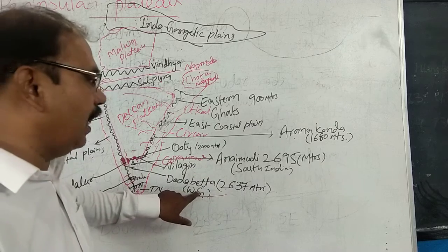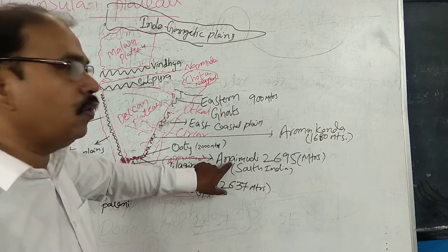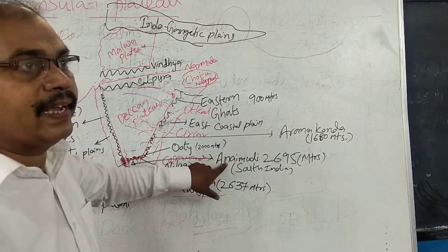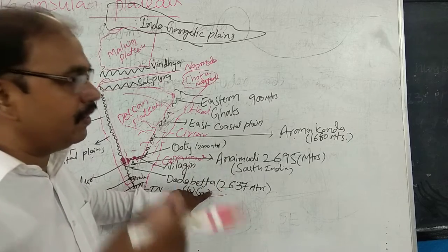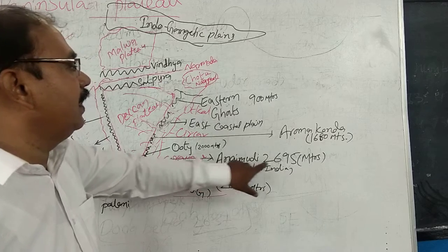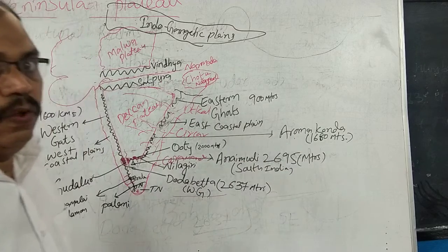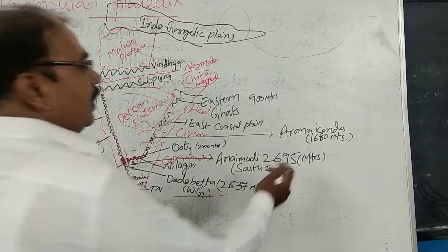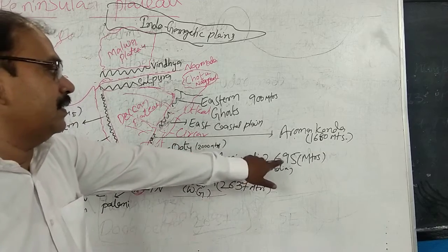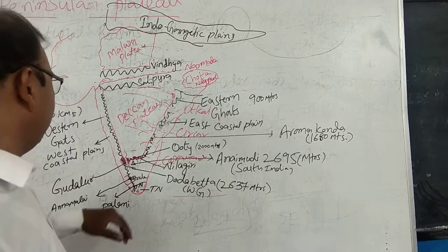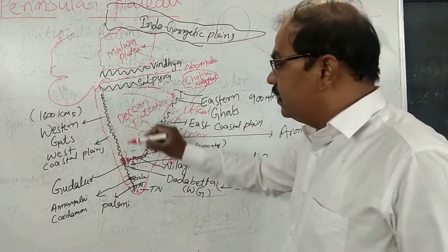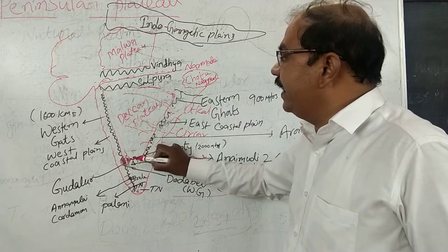The highest peak in all of South India is Anaimudi, with a height of 2695 meters — not to be confused with Dodabetta, which is the highest peak only in the Western Ghats. The Western Ghats join the Nilgiri Hills at a place called Gudalur. The highest point in the Nilgiri Hills is Ooty, a well-known hill station.